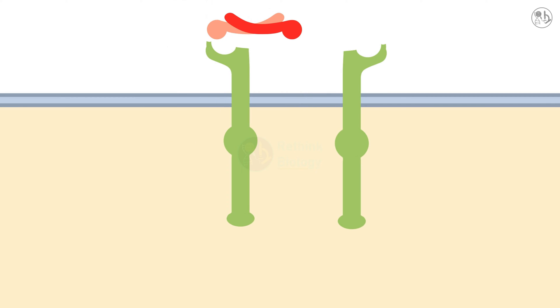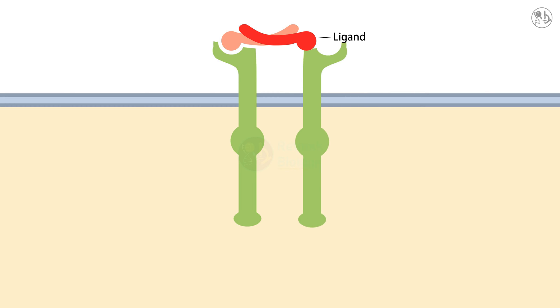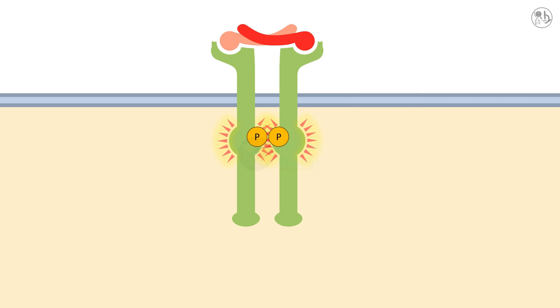However, when a ligand binds to the extracellular domain of RTK, it causes the receptor to dimerize, meaning to form a pair with another RTK. This brings the two kinase domains close to each other and they start to phosphorylate each other on specific tyrosine residues.